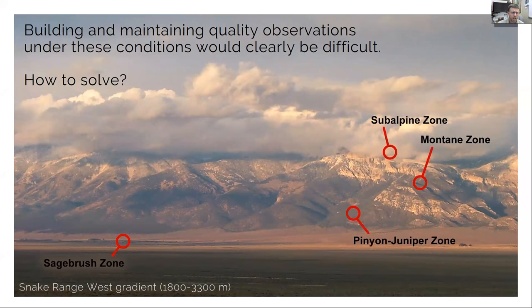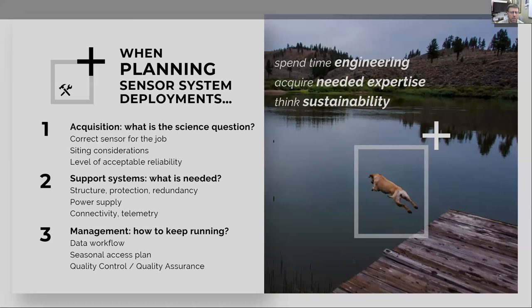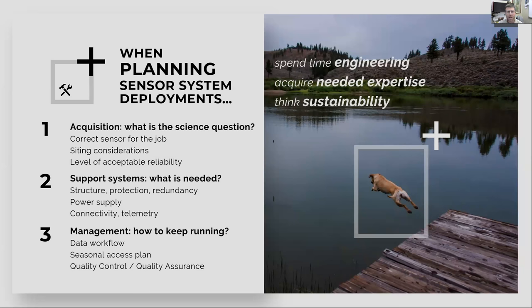Under these conditions, building and maintaining a network is difficult and in theory would require a lot of man hours. How do you reduce the expense of maintaining this kind of network when there's this issue of sustainability? At least in the United States, getting the National Science Foundation and the federal government to sustain these long-term networks has proven difficult, even within things like the LTER program. I would say every single LTER data manager would argue that they're significantly underfunded for their mission.